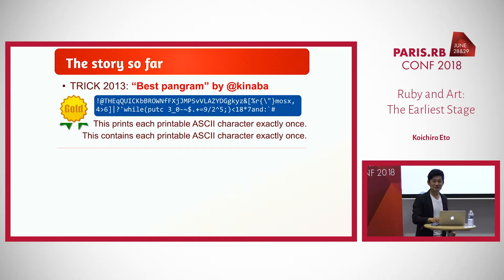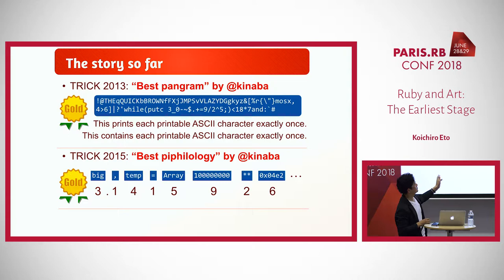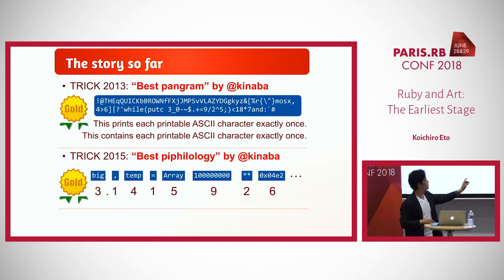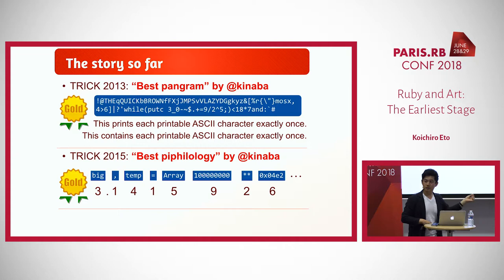The next contest was in 2015, also created by Inaba-san. This was a longer program, but the first line starts like this: 'tmp equals array.' This looks like a simple program, but the variable names and their lengths encode the digits 3, 1, 4, 1, 5, 9, 2, 6 — which is pi. If you run this program, it generates pi.